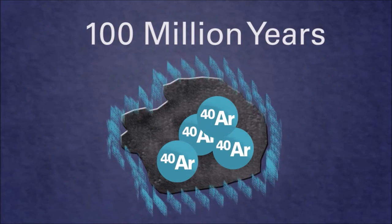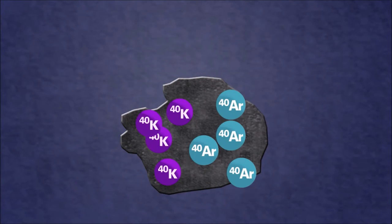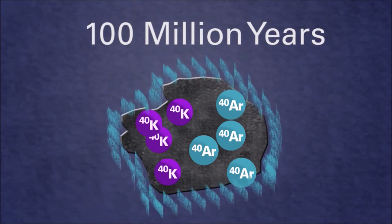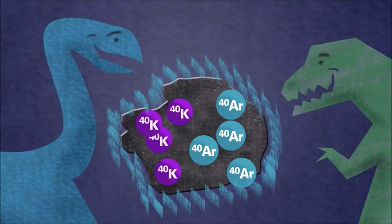By how much decay product there is compared with the amount of starting element. For example, if there is an equal amount of potassium and argon, then the rock would have solidified 100 million years ago, long before the dinosaurs became extinct.